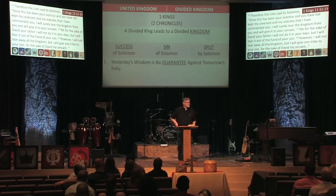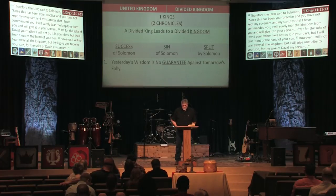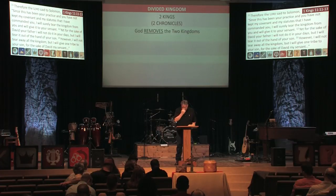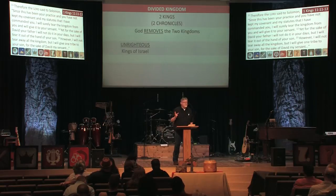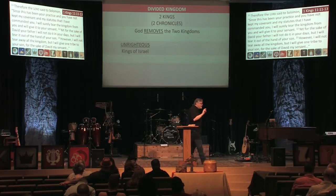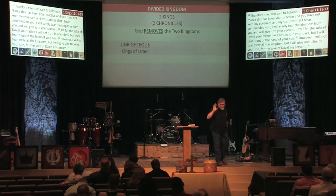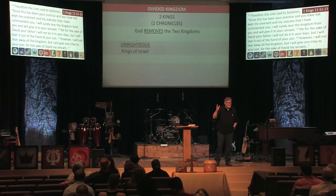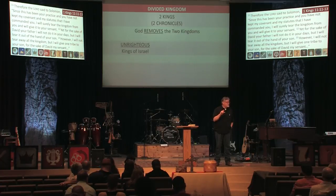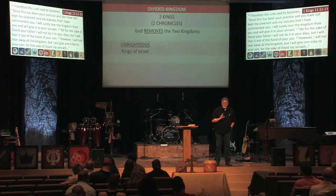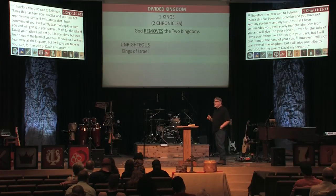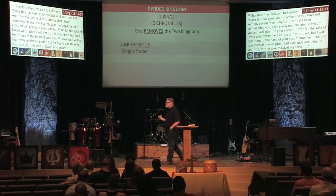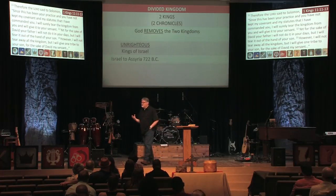We need to move quickly through 2 Kings. Basically, here we see that God removes the two kingdoms. There are the unrighteous kings of Israel — in the northern kingdom, this is Jeroboam. There are 19 kings and every one of them is bad, each described as they walked in the sins of Jeroboam. That ends with the nation of Israel being conquered by Assyria in 722 BC.